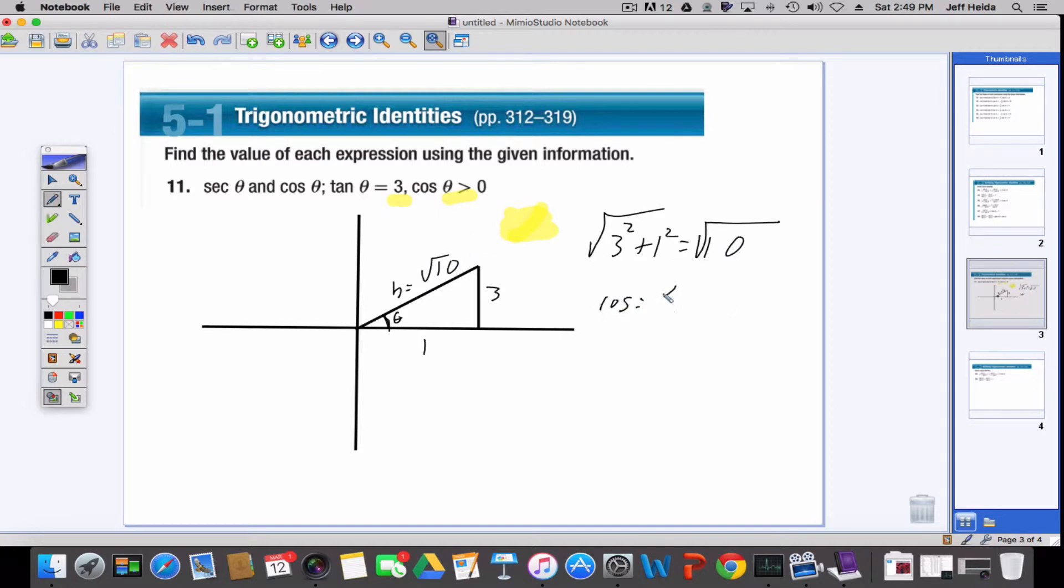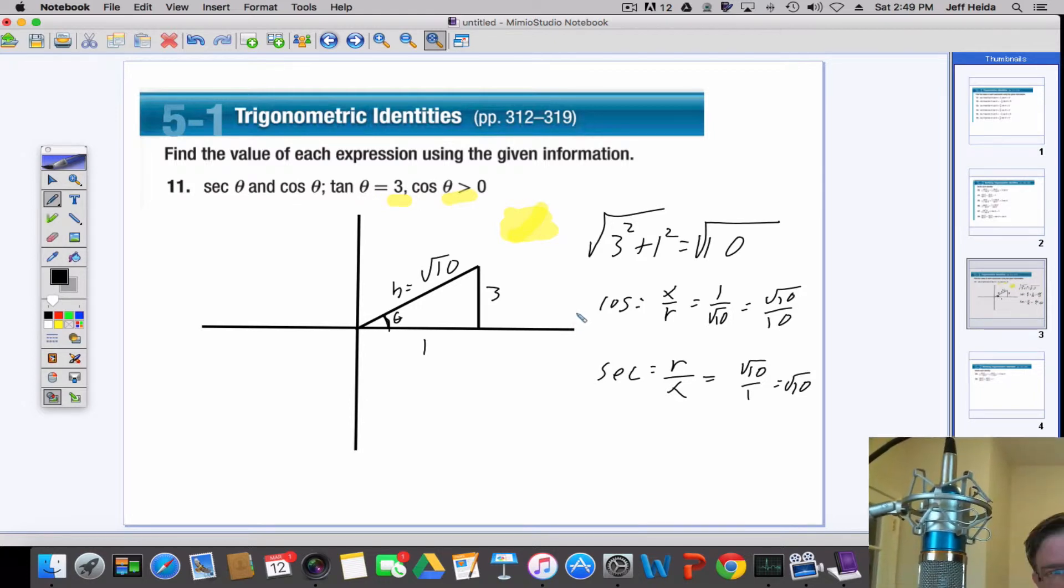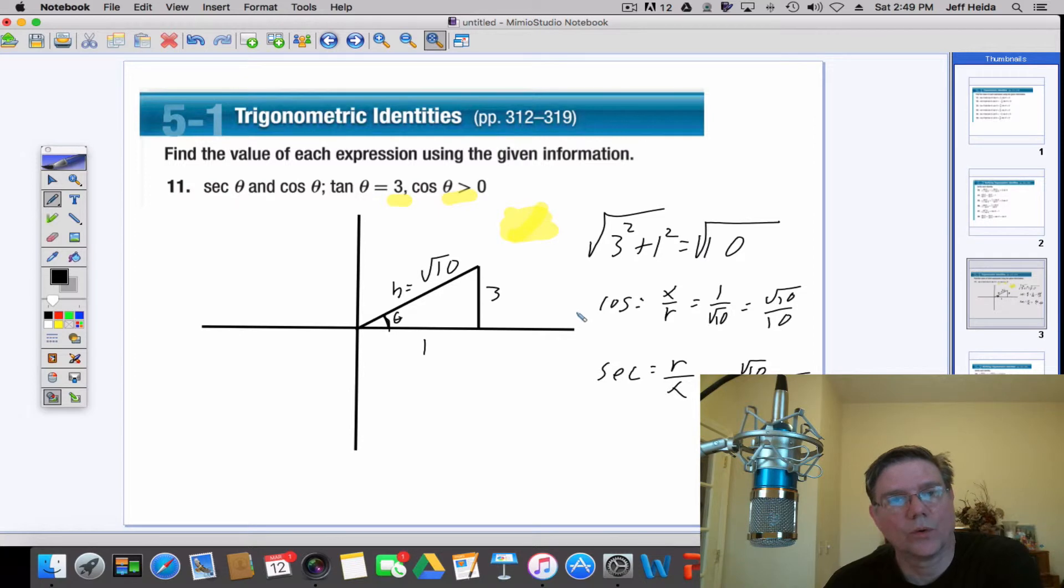So now we know the hypotenuse is square root of 10. We know that cosine is going to be x over r, which is 1 over square root of 10, or square root of 10 over 10. So that's cosine. And then secant is going to be r over x, which is square root of 10 over 1. Okay, so with hazelnut coffee, this is the way that we were able to go through and work our problems.